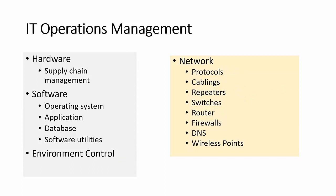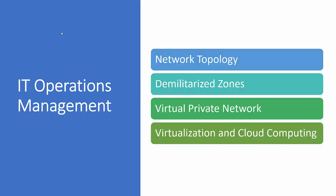A new element recently added to the CRISC syllabus is virtualization and cloud computing. But first, let's discuss network topology — the layout of the network. Before installing any network, we design its layout, which is called the network topology. We have different types: bus topology, ring topology, and star topology. We need to understand the risks associated with each. In bus topology, systems A, B, and C are all connected to the same cable. If the cable goes down, all connections go down — that is the risk of bus topology.